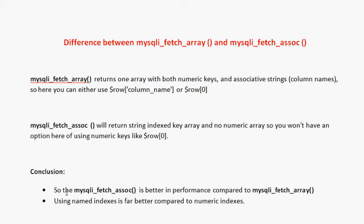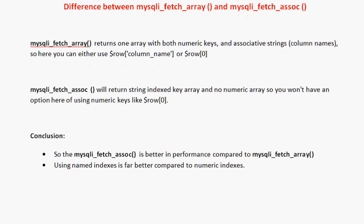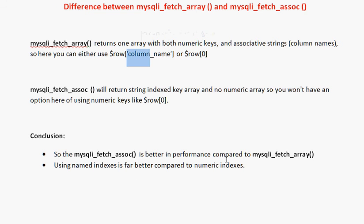This is the basic difference between mysqli_fetch_array and mysqli_fetch_assoc. The conclusion is that mysqli_fetch_assoc is better in performance. Why? Because mysqli_fetch_array returns two types of indexes — numeric and associative — so it needs more memory. mysqli_fetch_assoc returns only one index, the name index, so it is better to use.